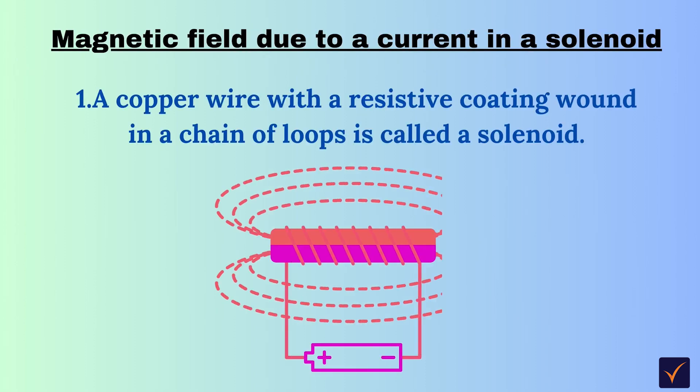Let us learn about the solenoid. It is a copper wire with a resistive coating wound in a chain of loops — that is our solenoid. Electric current passing through a solenoid generates magnetic lines of force in a specific pattern, as shown in the diagram below.